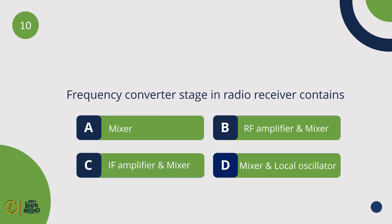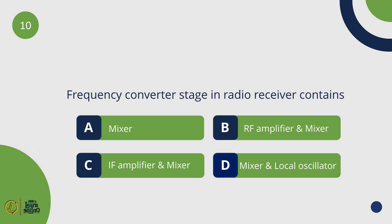The frequency converter stage in a radio receiver contains a mixer and local oscillator.